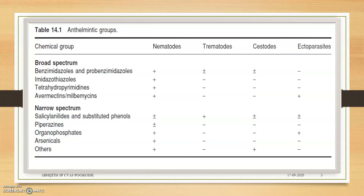This is a picture from the book mentioned. We can see there are broad spectrum and narrow spectrum anthelmintics and their activity. Broad spectrum drugs are active on nematodes and may or may not act on trematodes. These classifications are based on activity and chemical structure.